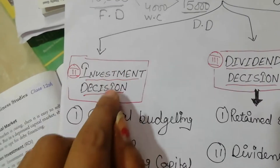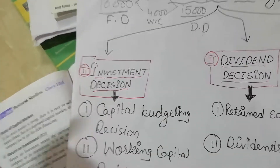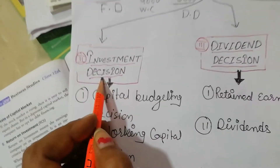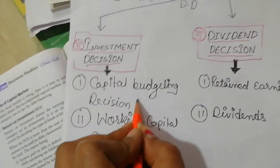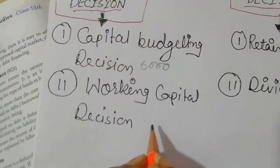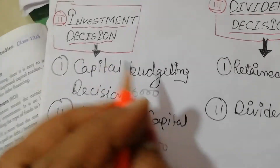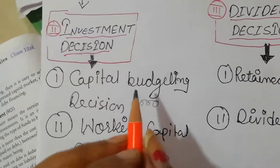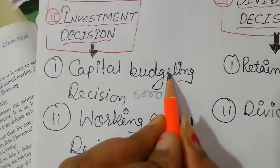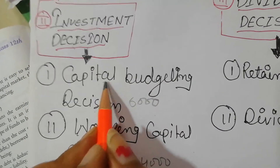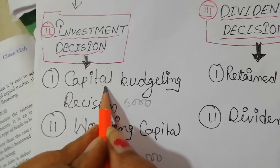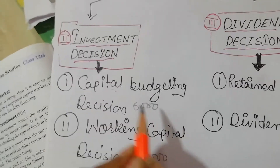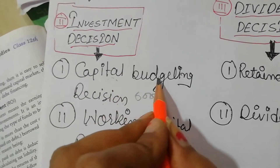Second is Investment Decision. Investment Decision means deciding where to invest. Like you have invested 6,000 and 4,000. Investment Decision is divided into two parts: the 6,000 in fixed assets — which is known as Capital Budgeting Decision — and 4,000 in working capital. Fixed assets are known as capital goods, for example machines.